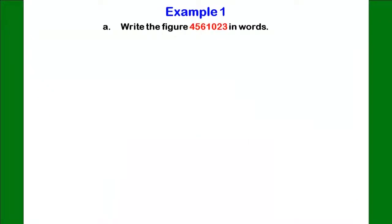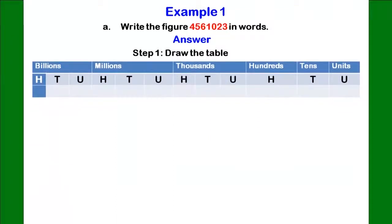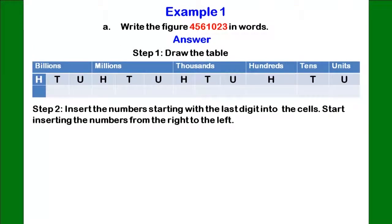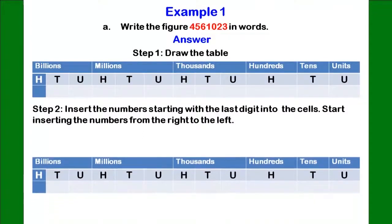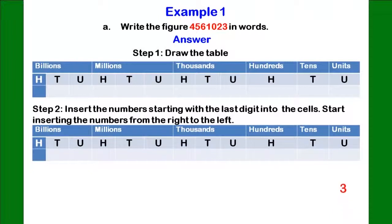Example 1. Write the figure 4,561,023 in words. The table has been drawn. Let us start inserting the numbers from the right-hand side to the left-hand side. 3 would go first to the unit column, followed by 2 which goes to the tens.